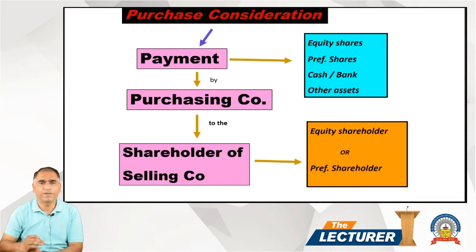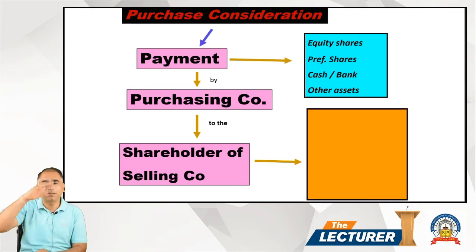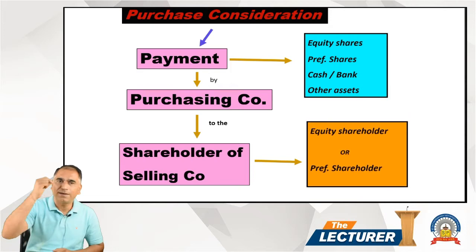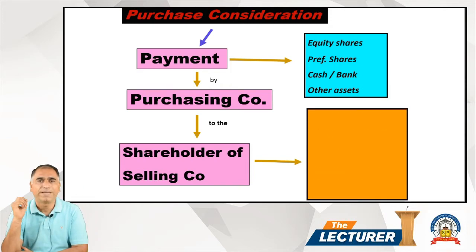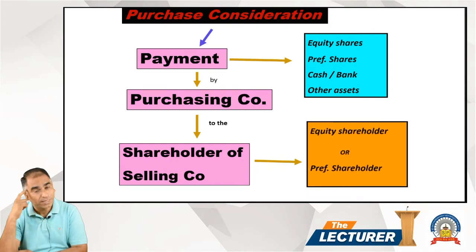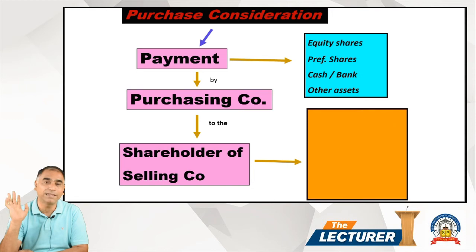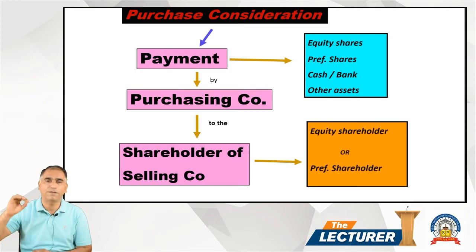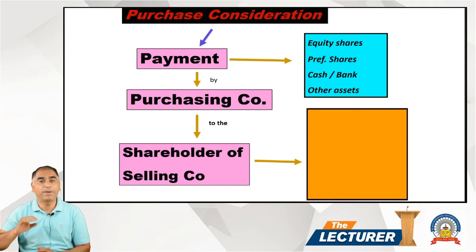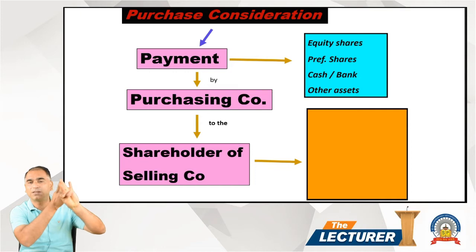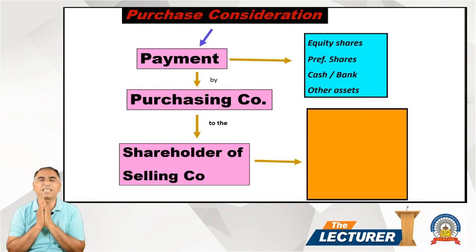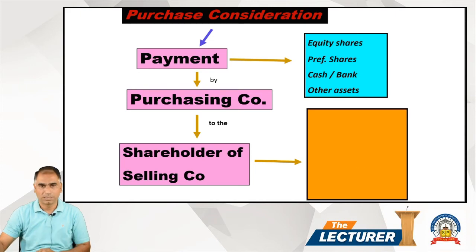Anything going into the hands of equity shareholders or preference shareholders forms part of PC. Anything other than that is not part of PC. This is the area where students make maximum mistakes - PC is payment made by purchasing company to the shareholders of selling company, not to the selling company itself. Shareholder could be equity or preference, and payment could be in any form: equity shares, preference shares, debentures, cash, etc. The important issue is who is receiving the payment.